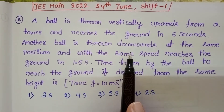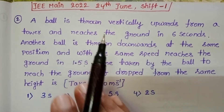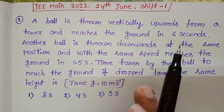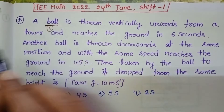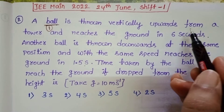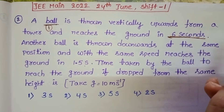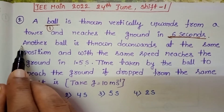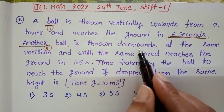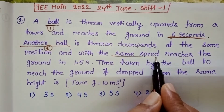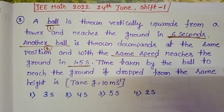This question is from Mechanics, Motion in a Straight Line, and involves three balls. The first ball is thrown vertically upward and reaches the ground in 6 seconds. The second ball is thrown from the same height but in the downward direction with the same speed, and it reaches the ground in 1.5 seconds.